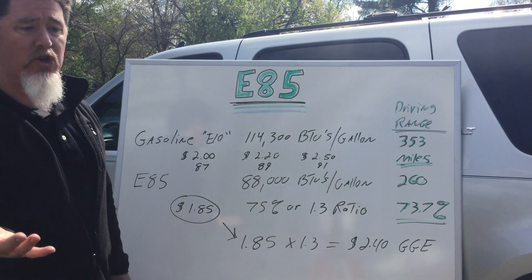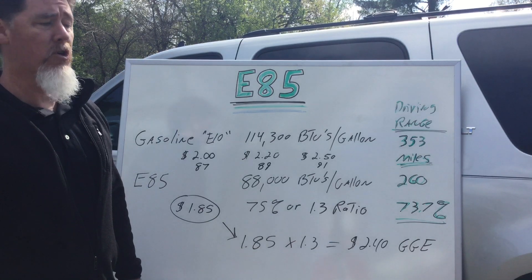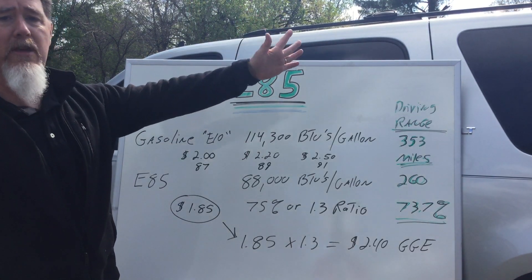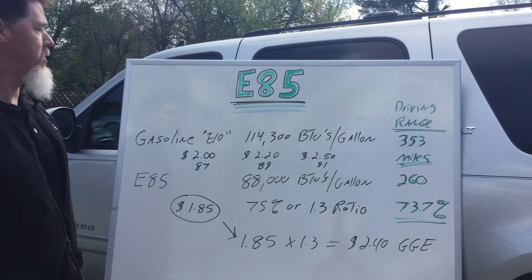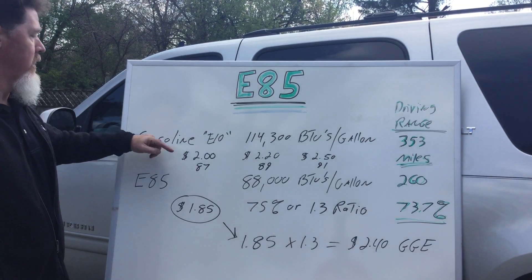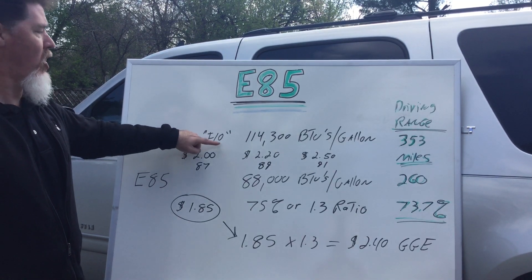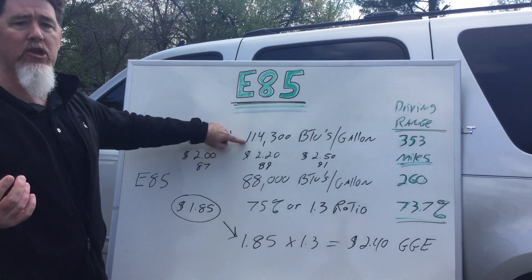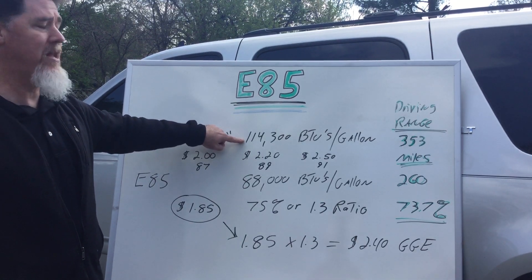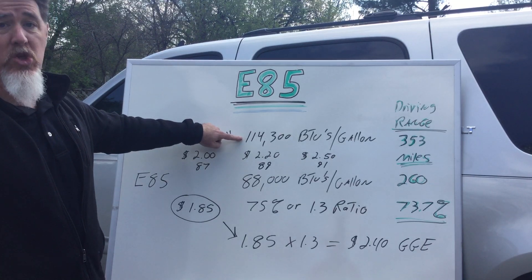In order to figure out this particular question — which probably every single owner has as they're going to a fuel station, because there are literally millions of flex fuel vehicles on the road today — you have to understand that regular gasoline is probably about 10% alcohol. When you look at the amount of energy it has per gallon, it has 114,300 BTUs (British thermal units) per gallon, which is quite a lot.